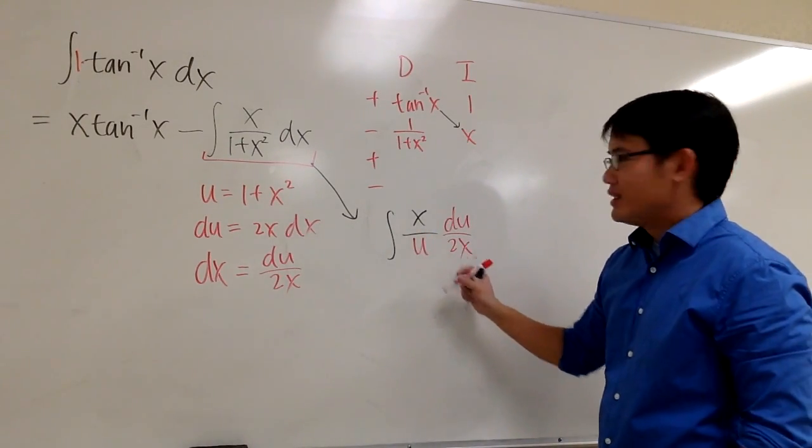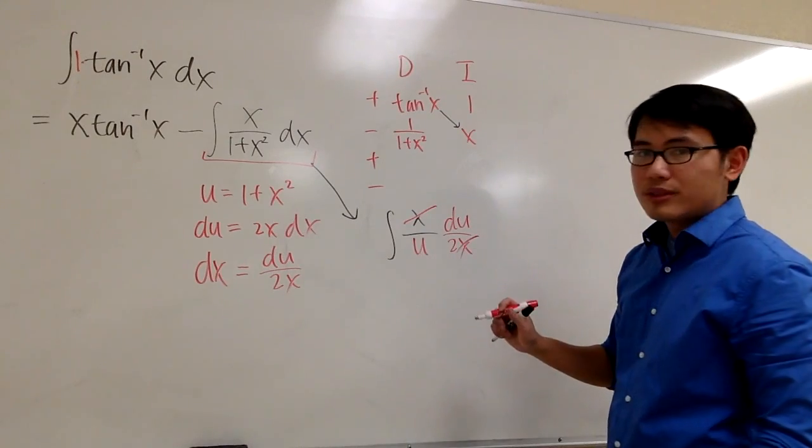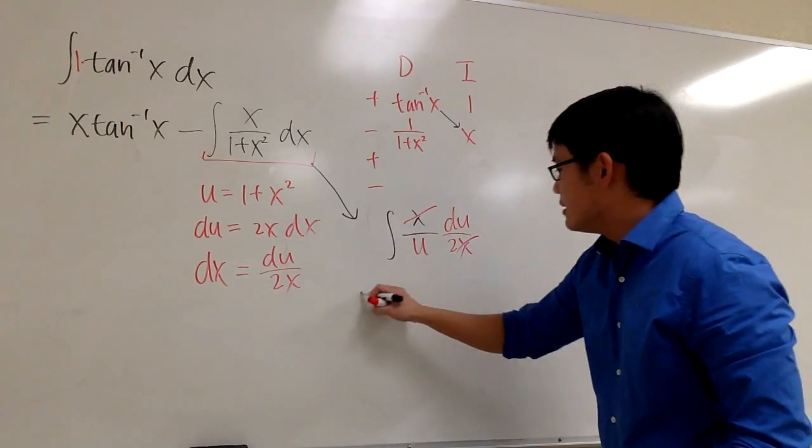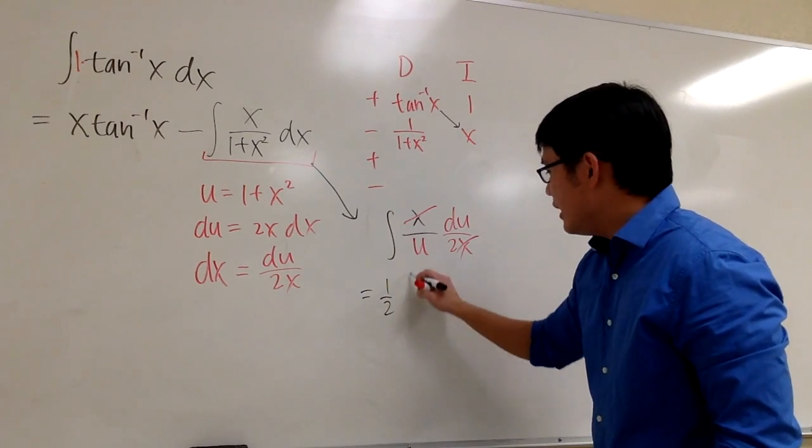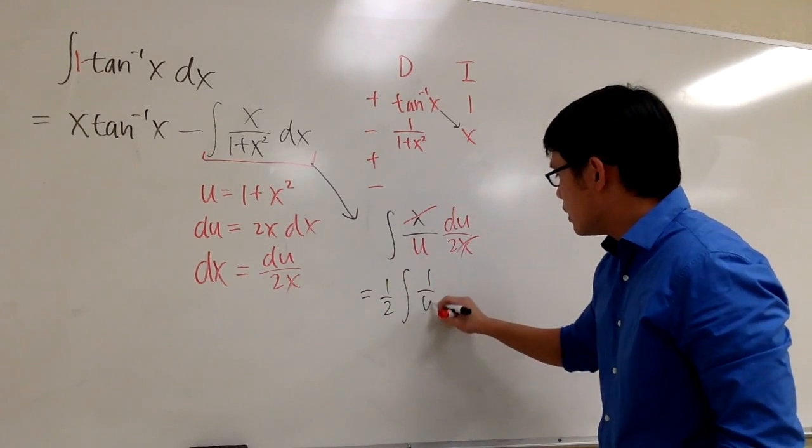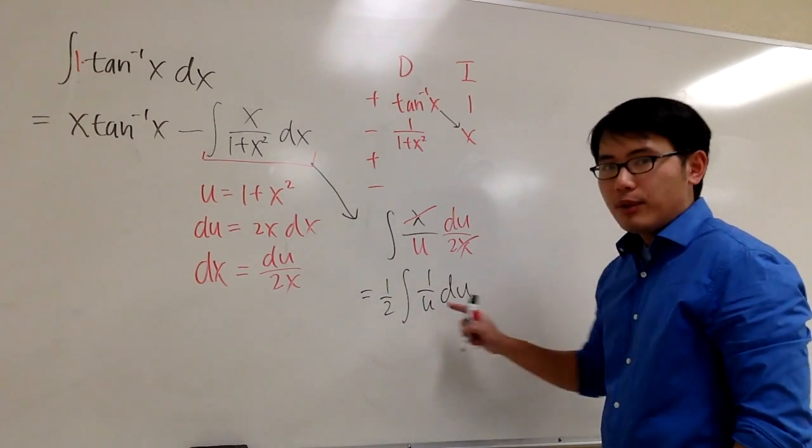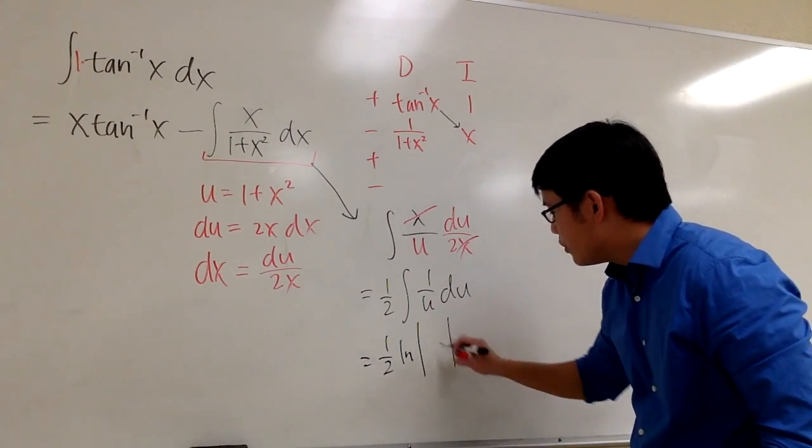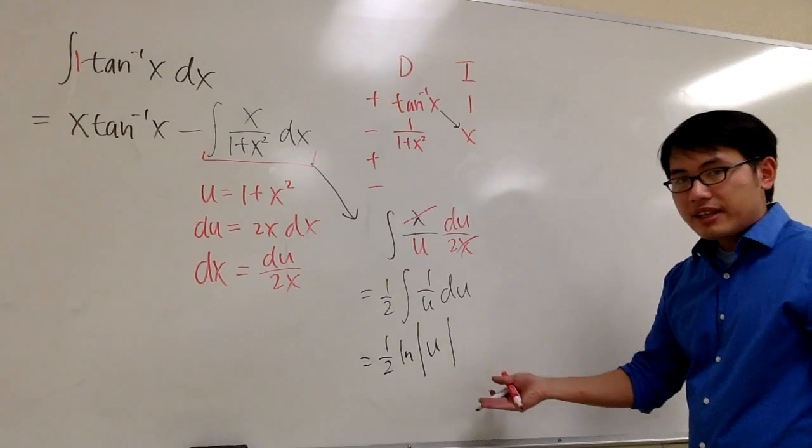And by looking at this part, as you can see, the x cancel each other out. We have a 2 on the denominator, we can factor it out. This is the same as 1 half integral of 1 over u, du. And what's the integral of this? Of course, this is going to be 1 half ln absolute value of u. We are not done yet.